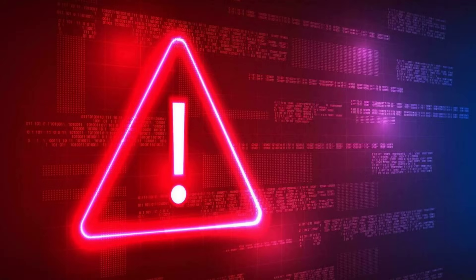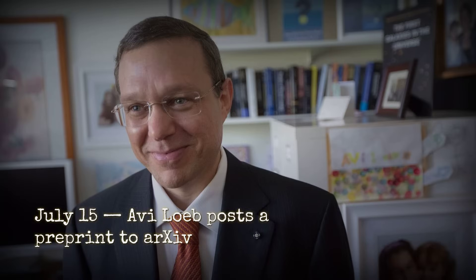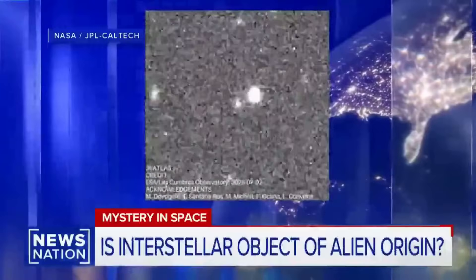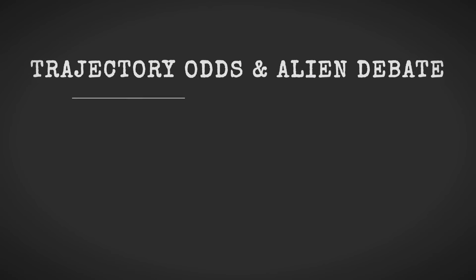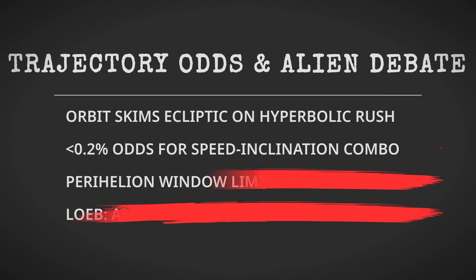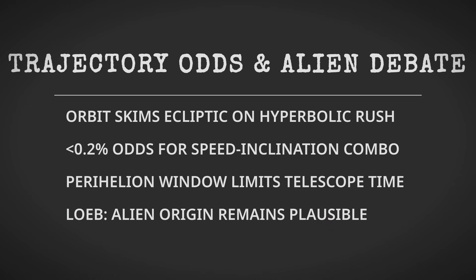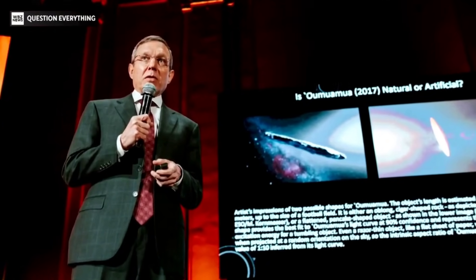Within days, the anomaly becomes a flashpoint. On July 15th, Harvard astrophysicist Avi Loeb posts a preprint to arXiv titled 'Is 3I-Atlas Alien Technology?' The paper lays out the evidence, not just the chemistry, but the statistical unlikelihood of the orbit and the way each parameter seems to skirt easy observation. Loeb's argument is careful, couched in probabilities and caveats, but the implication is clear. If these numbers don't come from chance, what's left?